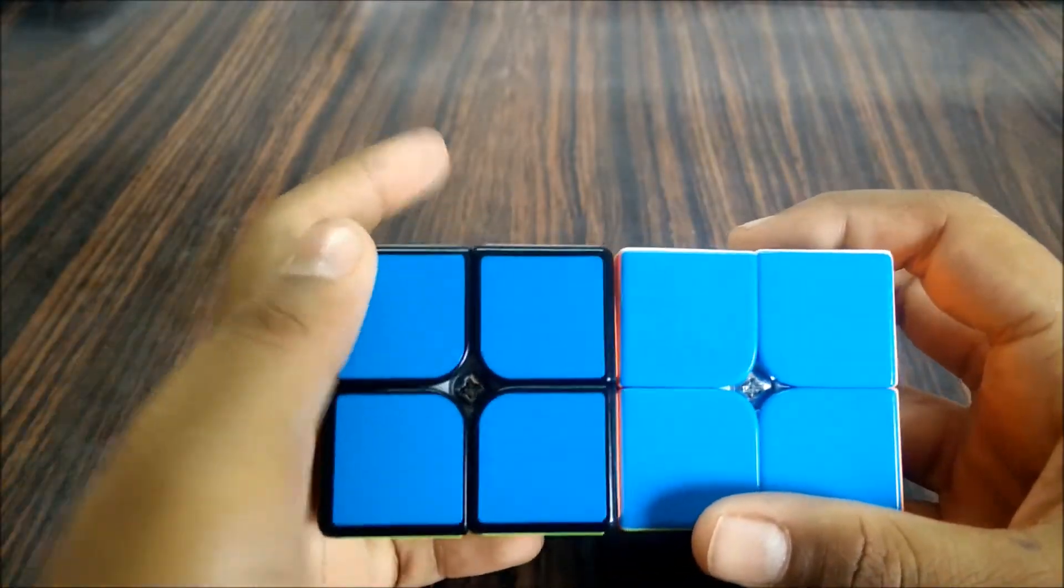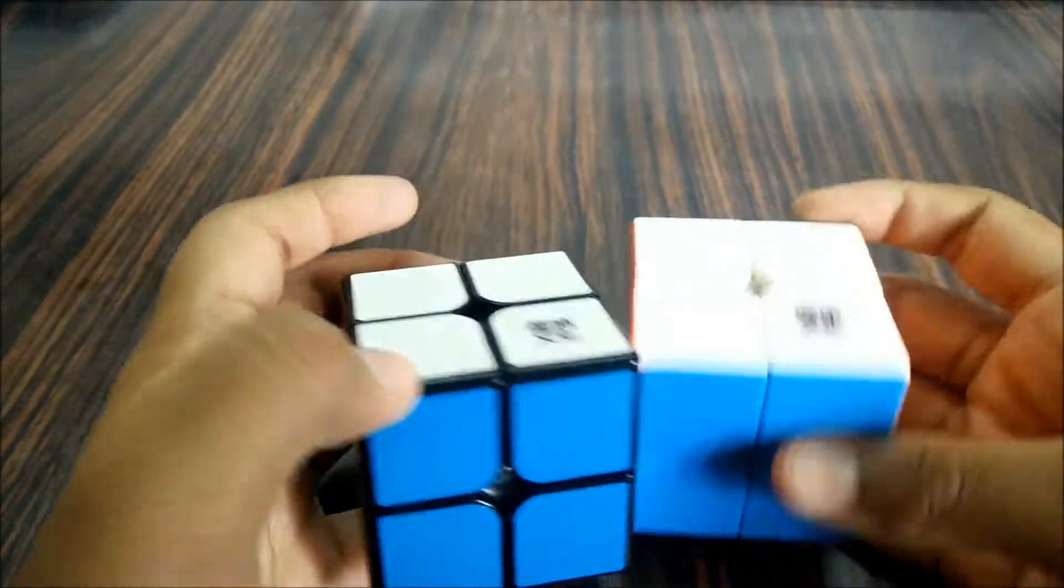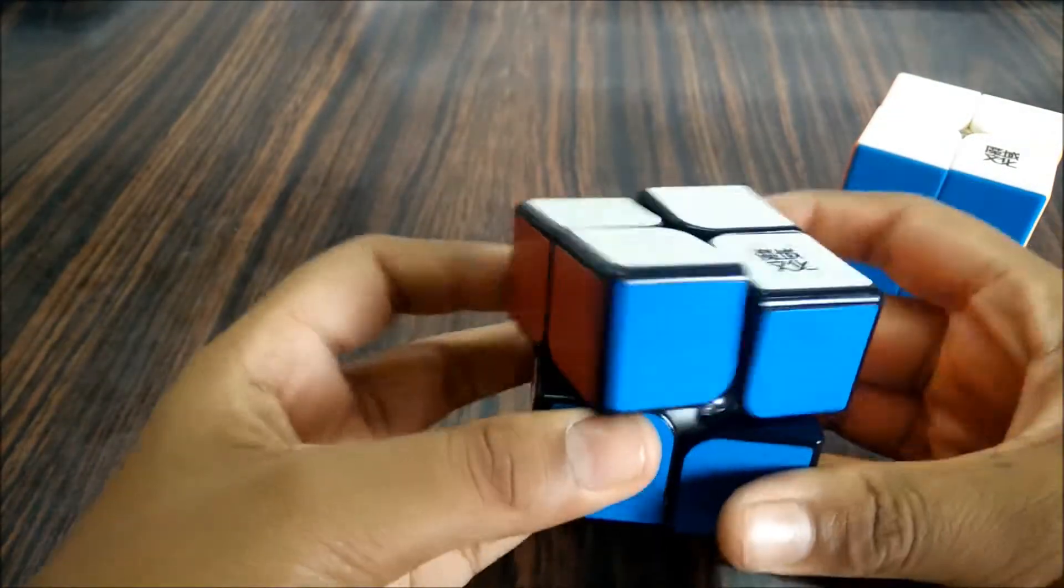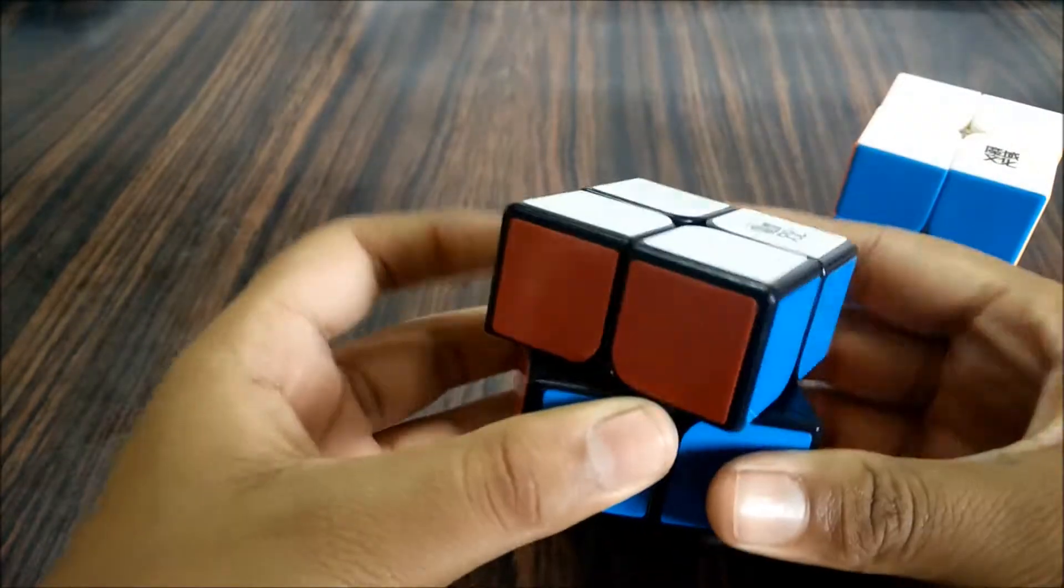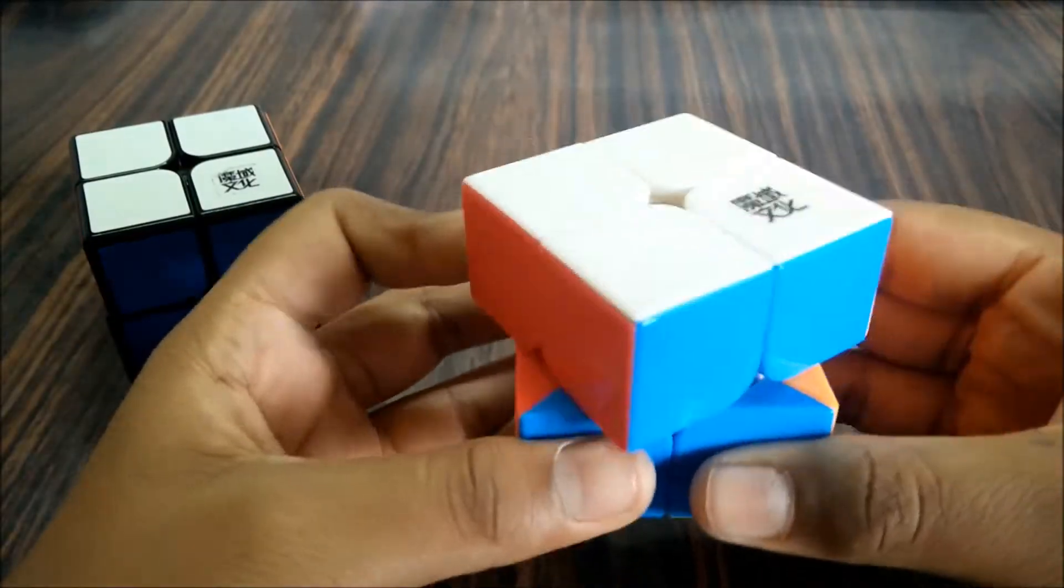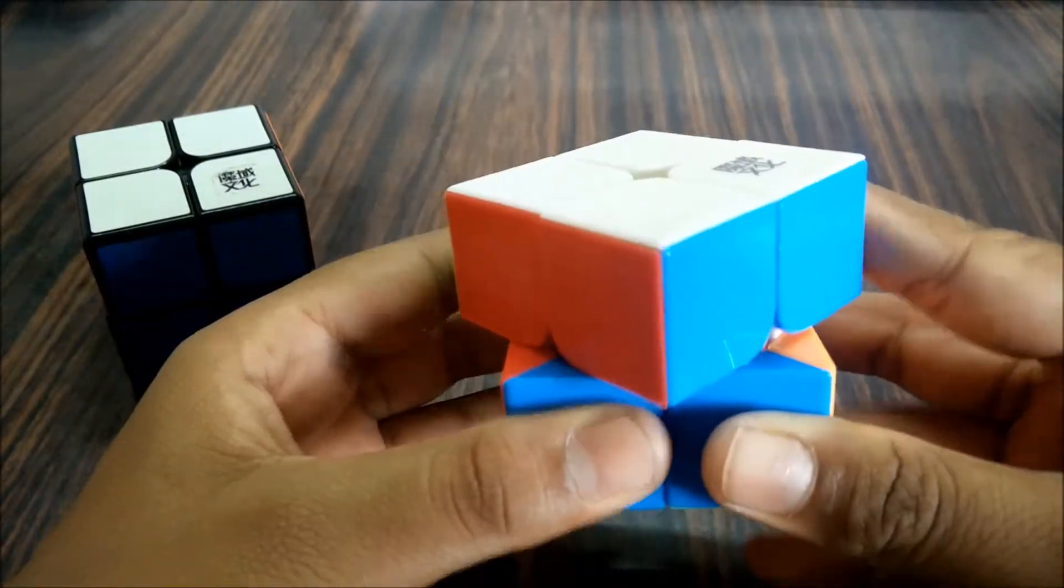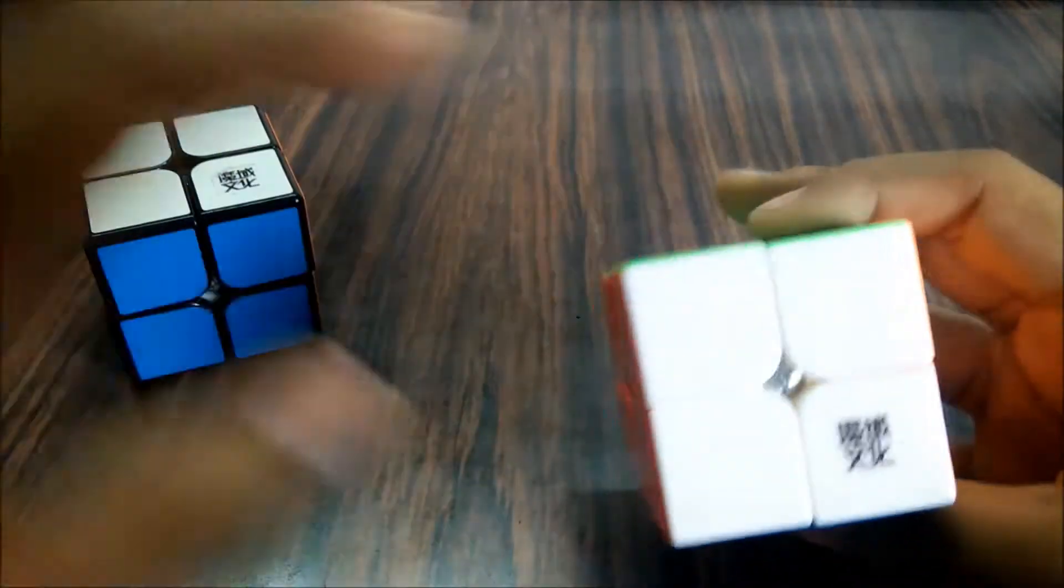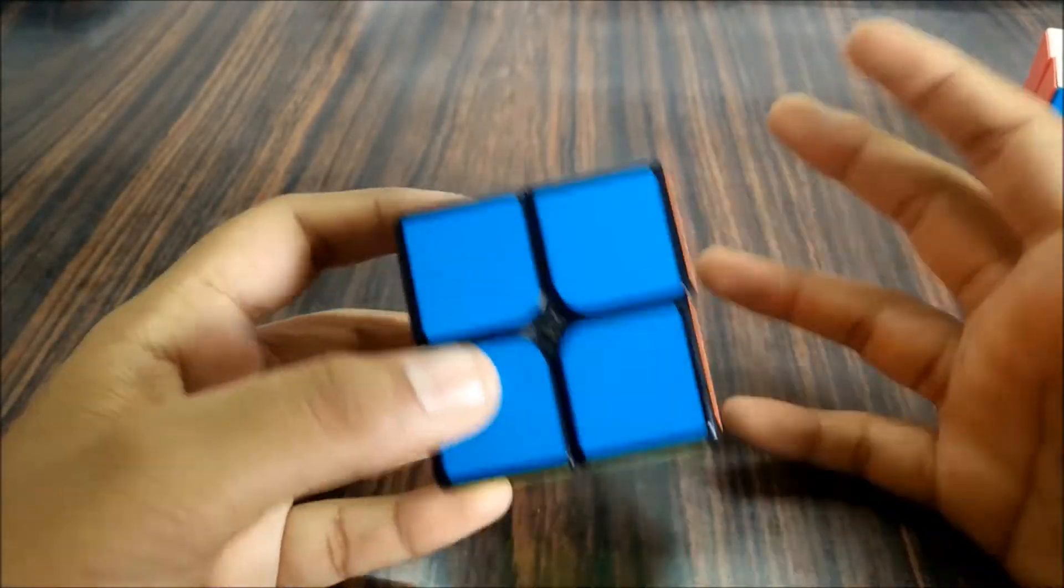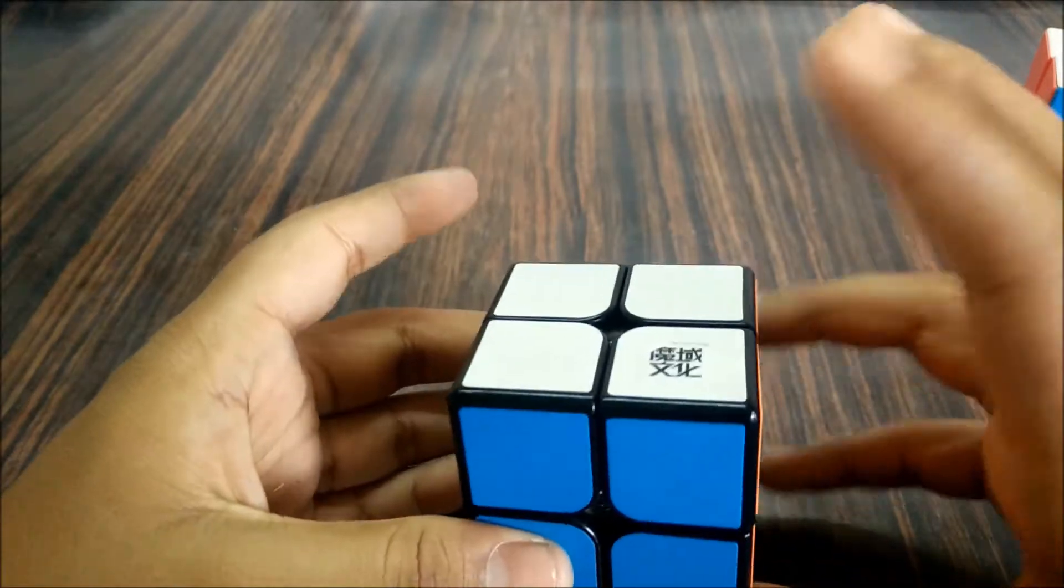So let's just do the comparison. First, the Vapo corner cutting is good enough. The Moyu Vapo actually doesn't require much corner cutting. Yeah, both are good. Okay, now let's see the speed of the cube.